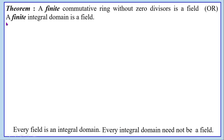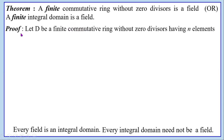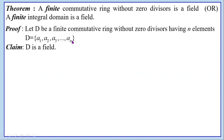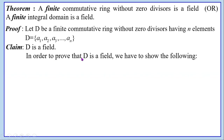Let D be a finite commutative ring without zero divisors having a unity element. Because it is finite, it must have a finite number of elements. We consider that D has n elements: D equals the set {a1, a2, a3, ..., an}. Now we have to show that D is a field.